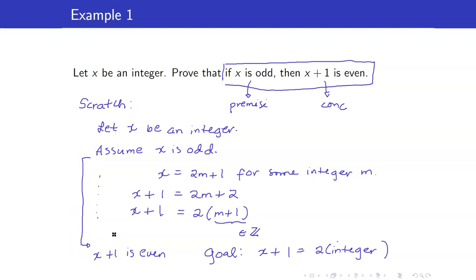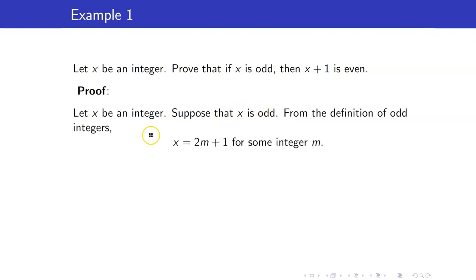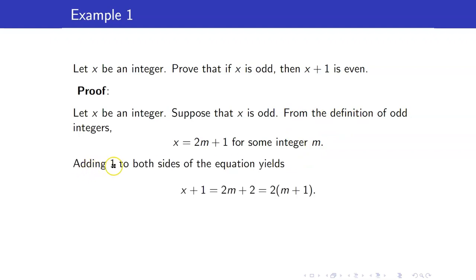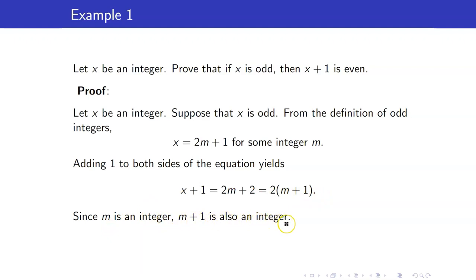Here is the formal proof. Let x be an integer. Suppose that x is odd. From the definition of odd integers, x equals 2m plus 1 for some integer m. Adding 1 to both sides of the equation yields x plus 1 equals 2m plus 2, which equals 2 times (m plus 1). Since m is an integer, m plus 1 is also an integer. Hence, we have shown that x plus 1 is a product of 2 and an integer. Therefore, x plus 1 is even.